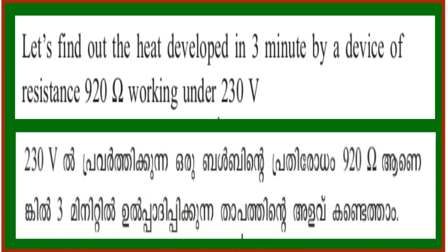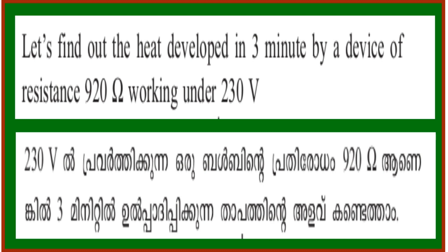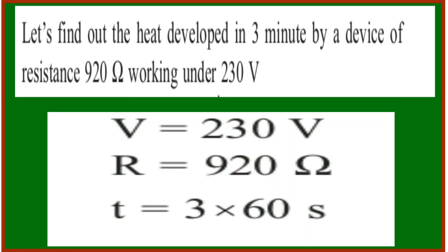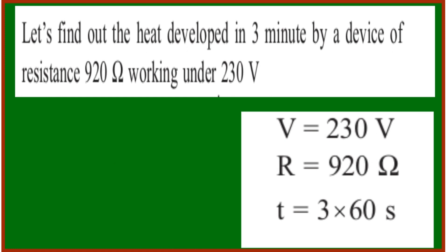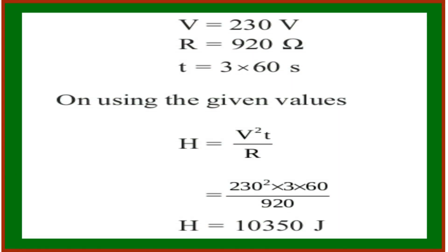Let's find out the heat developed in 3 minutes by a device of resistance 920 Ohm working under 230 volt. The voltage is 230 volt, resistance is 920 Ohm, time is 3 minutes, which is 3 × 60 seconds. So the heat equals V² divided by R, into T — that is 230² divided by 920 into 3 into 60, giving heat equal to 15,390 J.